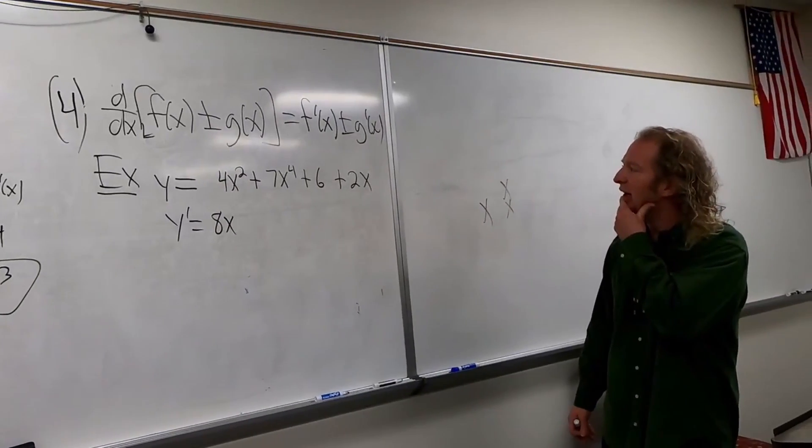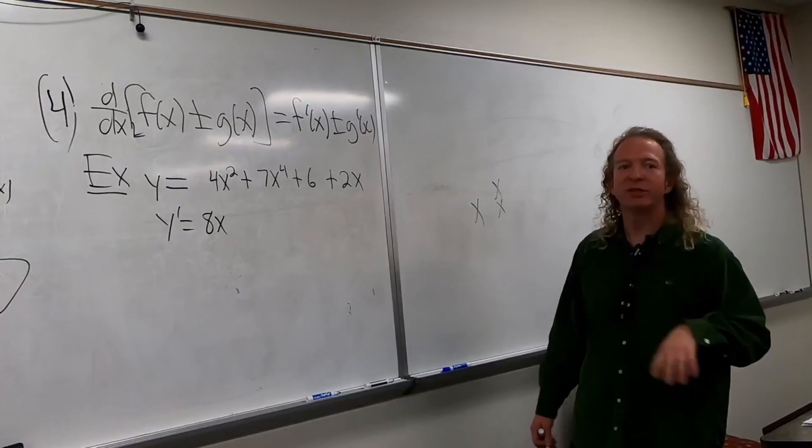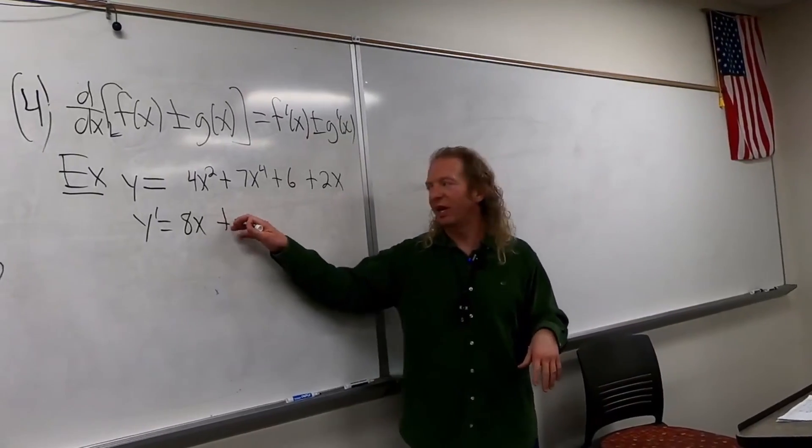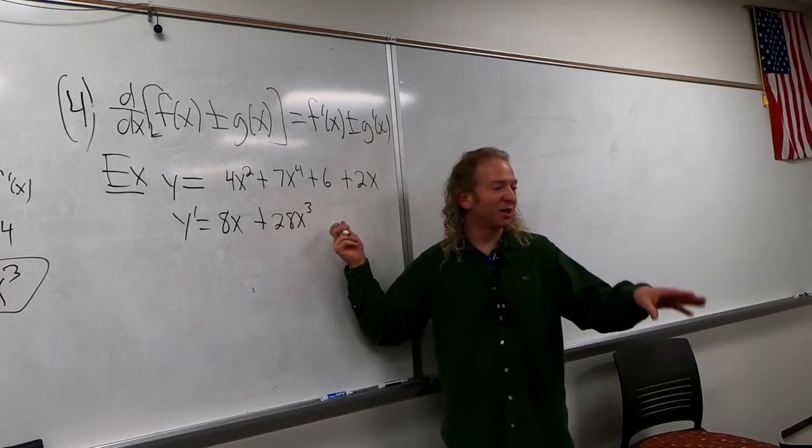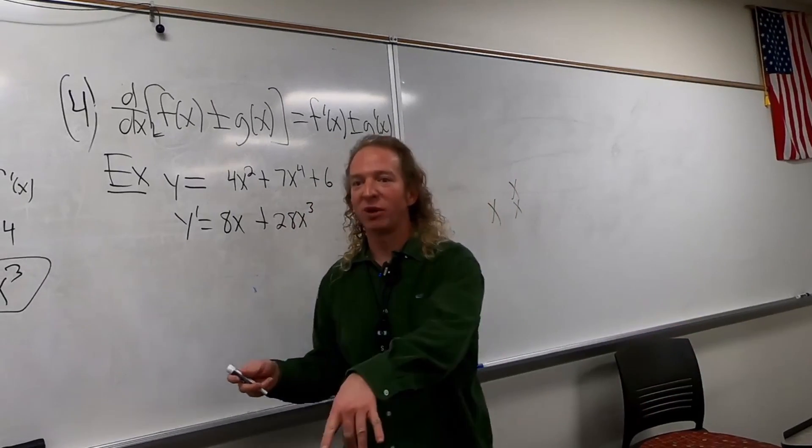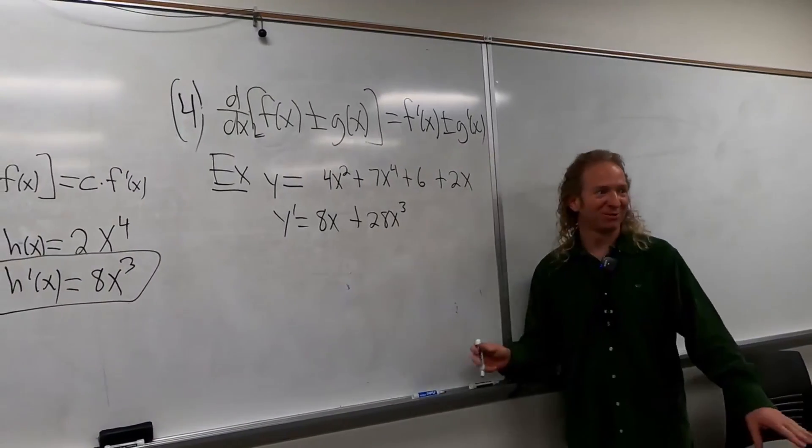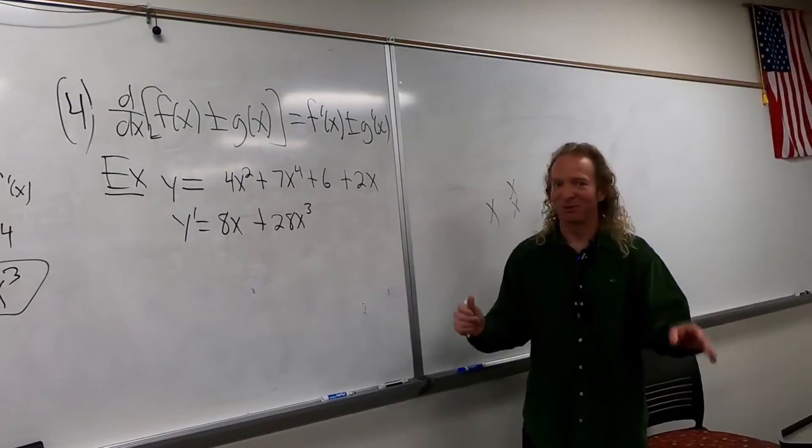8x and then 4 times 7 is 28. I was thinking about something bad. x cubed, right? I was thinking the points reset now, right? The mistake points.